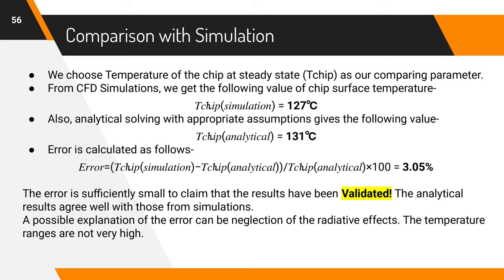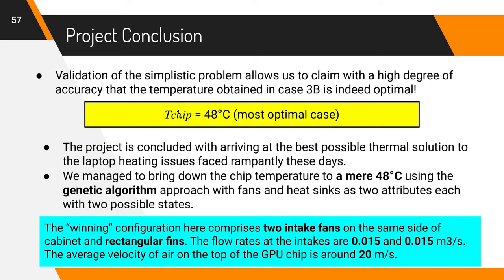Therefore, we conclude this project by saying that we managed to bring down the temperature to a mere 48 degree Celsius in the most optimal case and we used a systematic genetic algorithm approach in doing so. The winning configuration here comprises of two intake fans. Both are located on the same side of the cabinet or the casing and usage of rectangular fins for our heat sinks. Also the flow rates at both the intakes is same and is equal to 0.015 meter cube per second. And the average velocity of air on the top of GPU chip is around 20 meters per second.